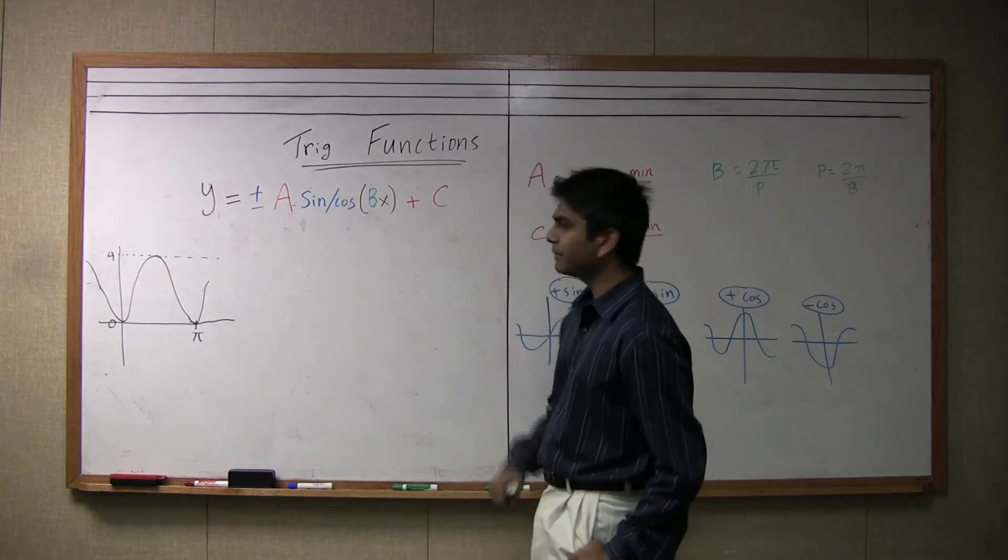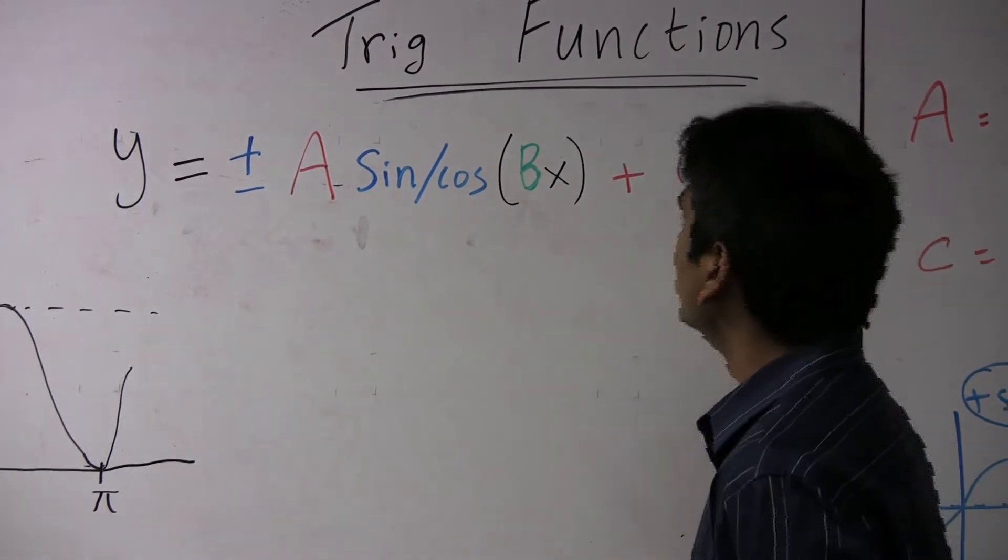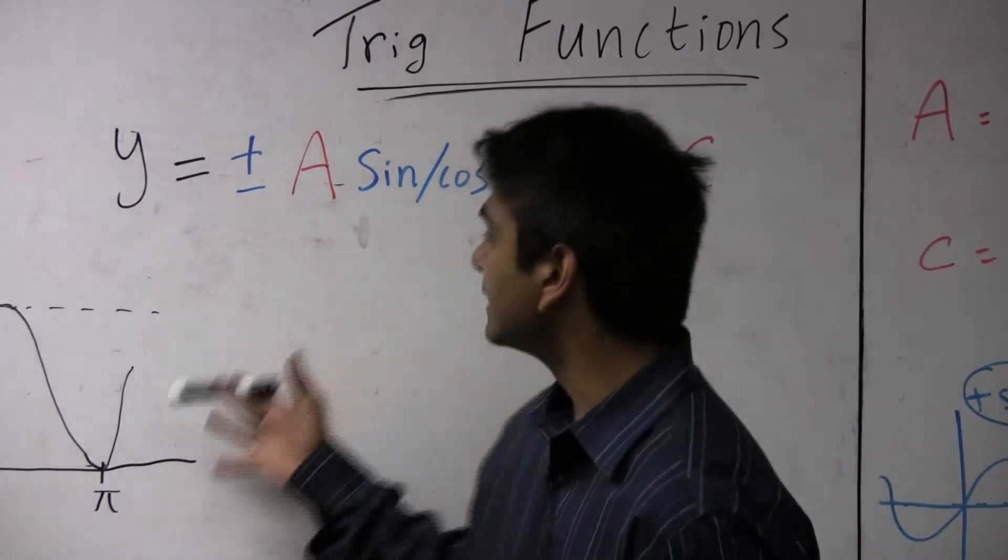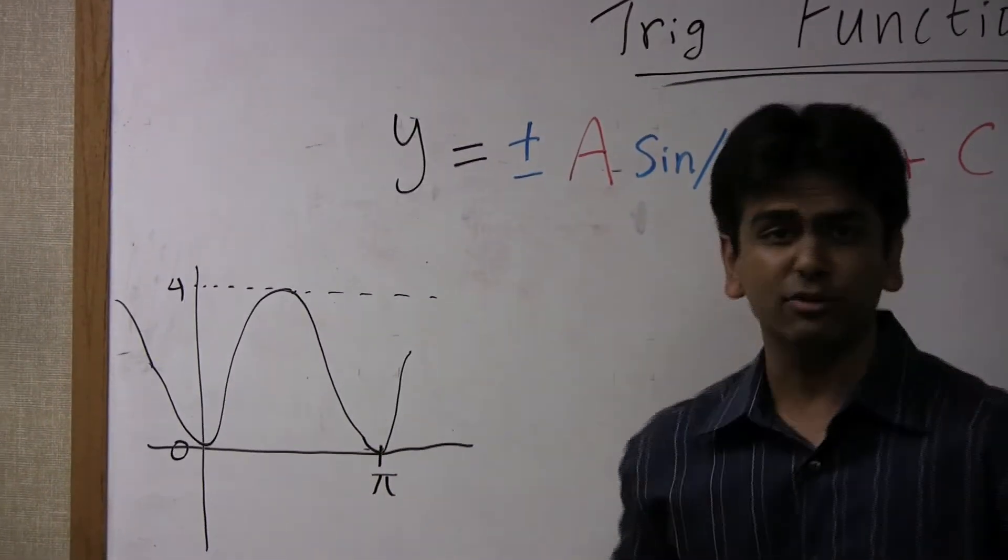So this is the basic form of trig functions, the a, b, and c's. Let's say we're given this example over here. Find the equation of this graph over here.